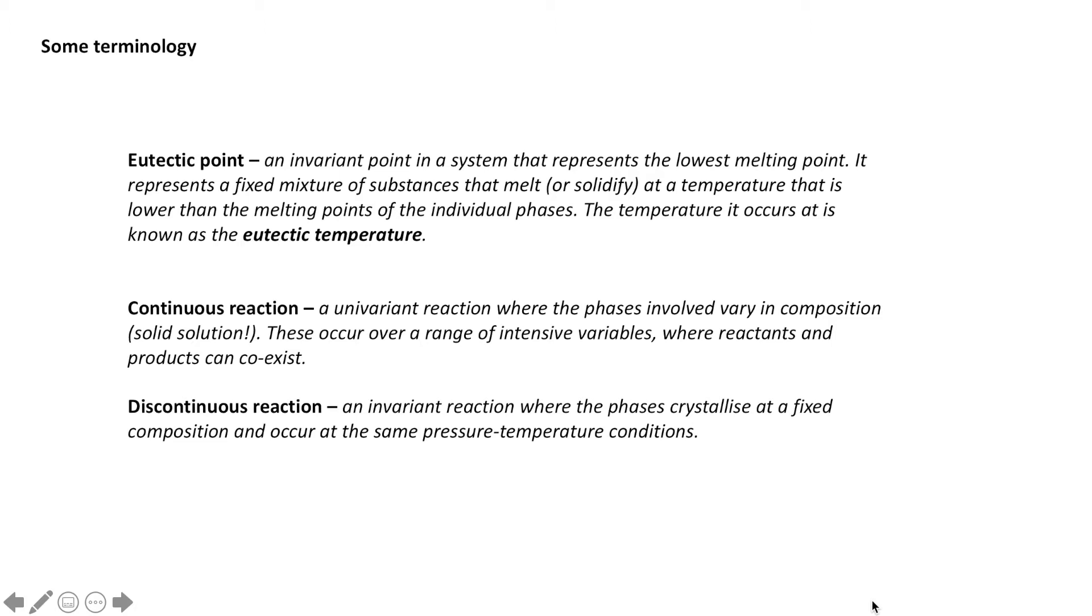Now I'm going to introduce you to two different types of reactions. So we've been looking at these in the previous lessons, but I haven't highlighted it. A continuous reaction represents a univariant reaction where the phases involve varying composition. So if you think back to the solid solution, the reaction we had there was continuous, because it happened over a range of conditions, over a range of compositions.